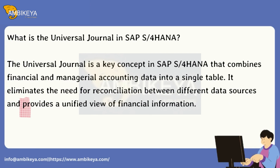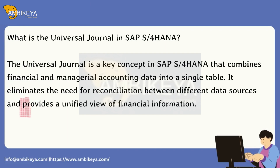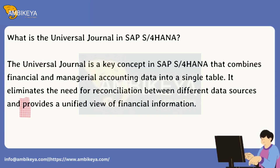What is the Universal Journal in SAP S4HANA? The Universal Journal is a key concept in SAP S4HANA that combines financial and managerial accounting data into a single table. It eliminates the need for reconciliation between different data sources and provides a unified view of financial information.